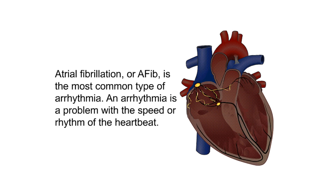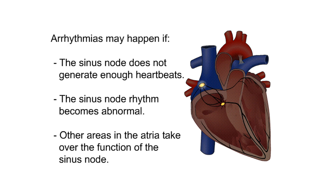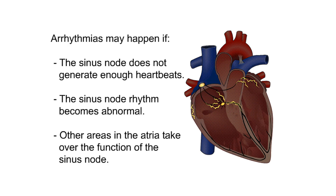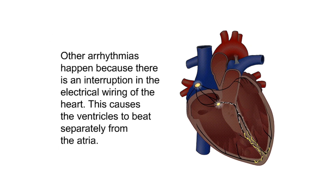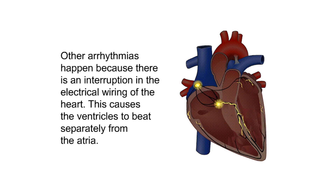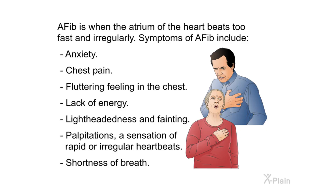Atrial fibrillation. Atrial fibrillation, or AFib, is the most common type of arrhythmia. An arrhythmia is a problem with the speed or rhythm of the heartbeat. Arrhythmias may happen if the sinus node does not generate enough heartbeats, the sinus node rhythm becomes abnormal, or other areas in the atria take over the function of the sinus node. Other arrhythmias happen because of an interruption in the electrical wiring of the heart, causing the ventricles to beat separately from the atria. AFib is when the atrium of the heart beats too fast and irregularly.